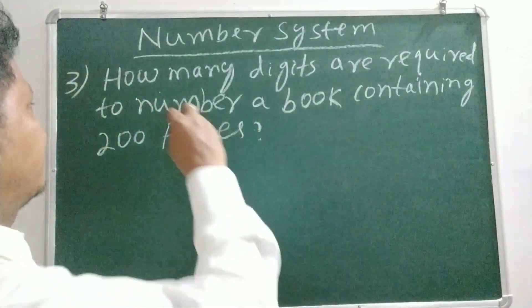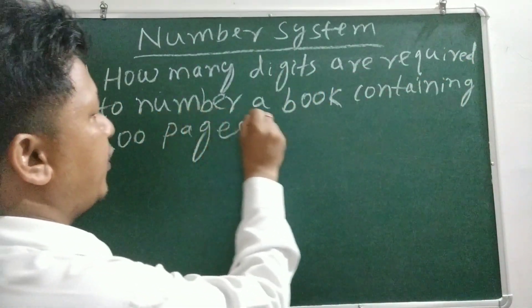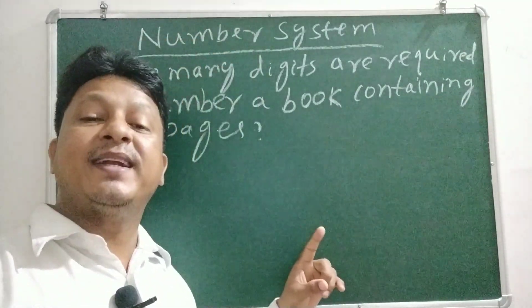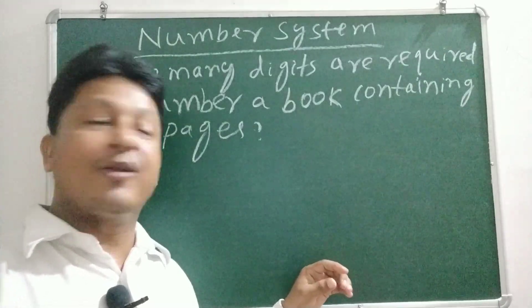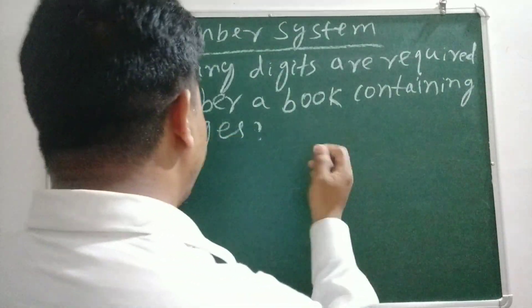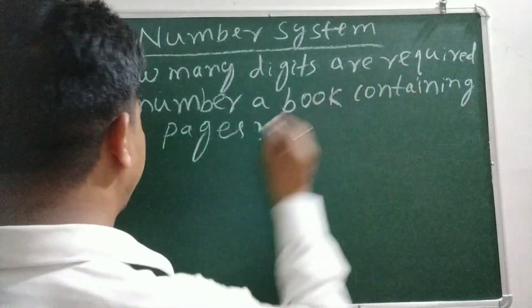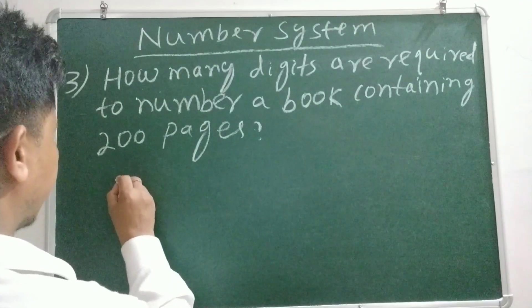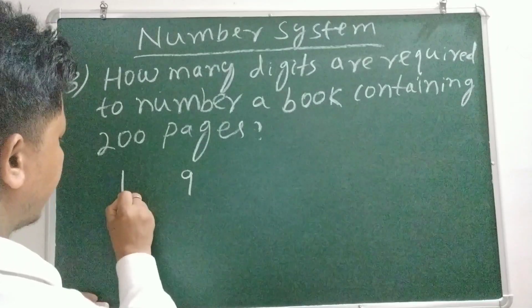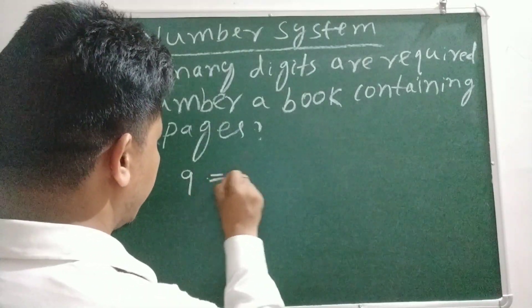How many digits are required to number a book containing 200 pages? Not pages, but digits. Pages 1 to 9 use 1 digit each, giving 9 digits total.